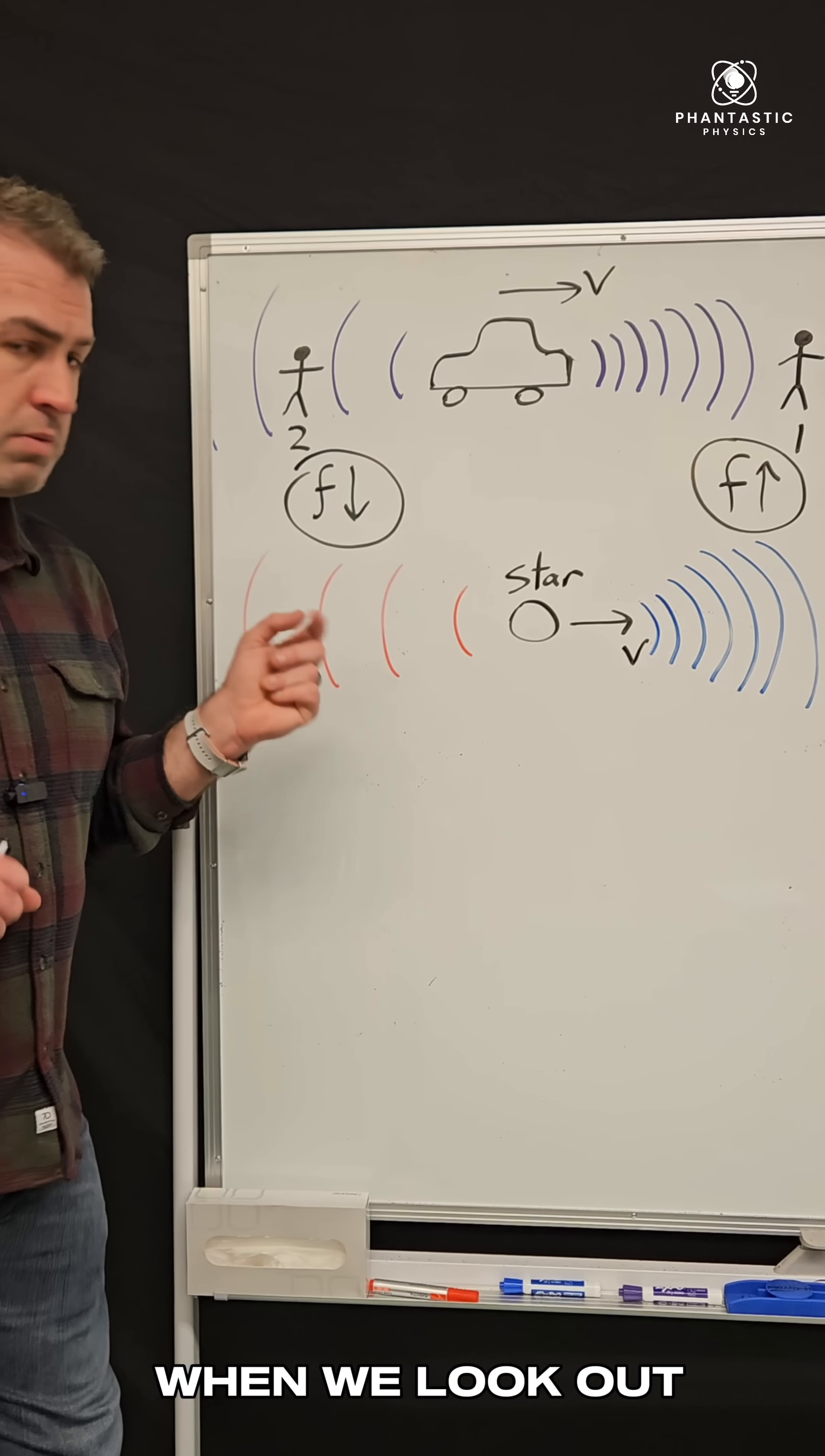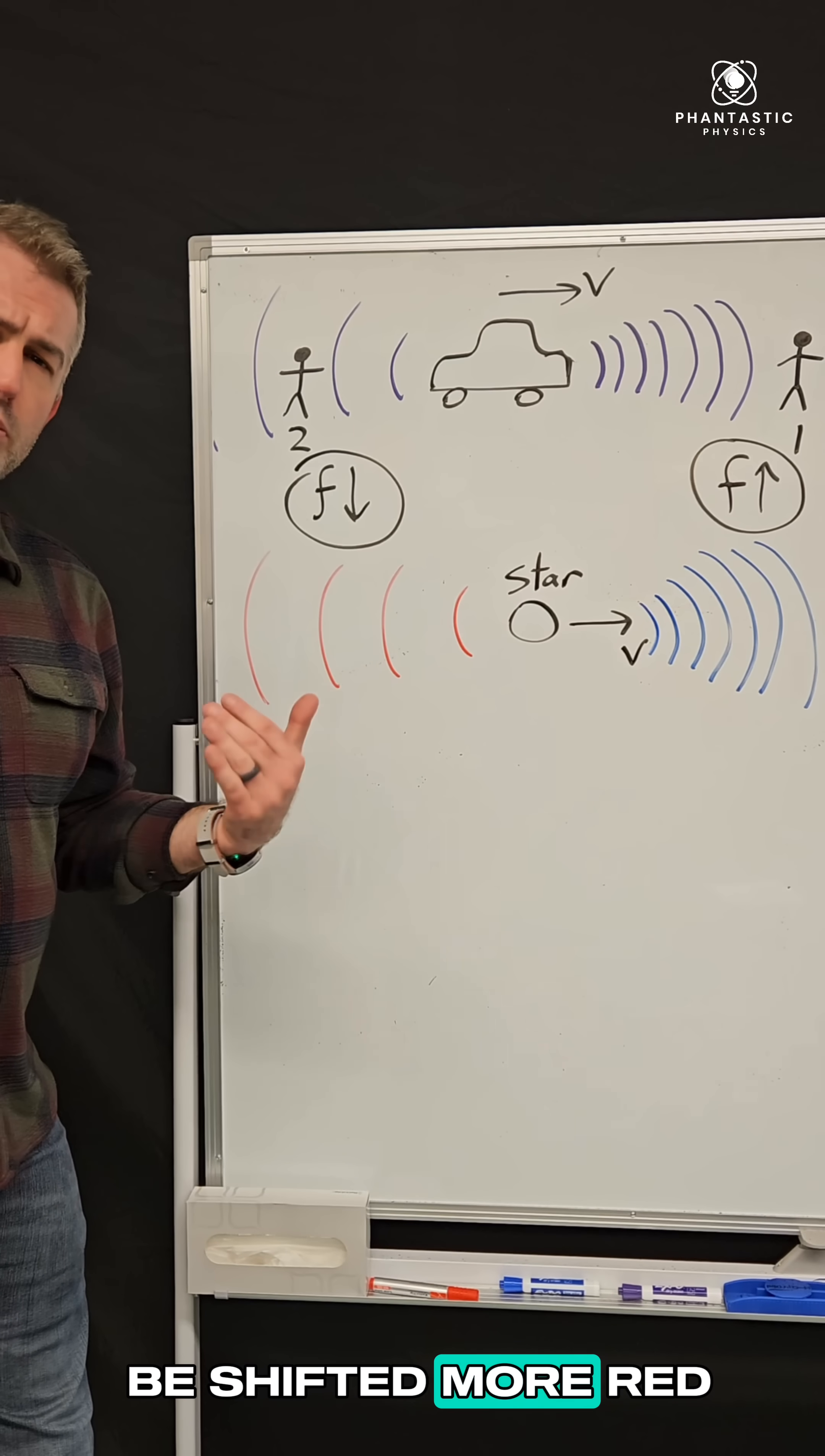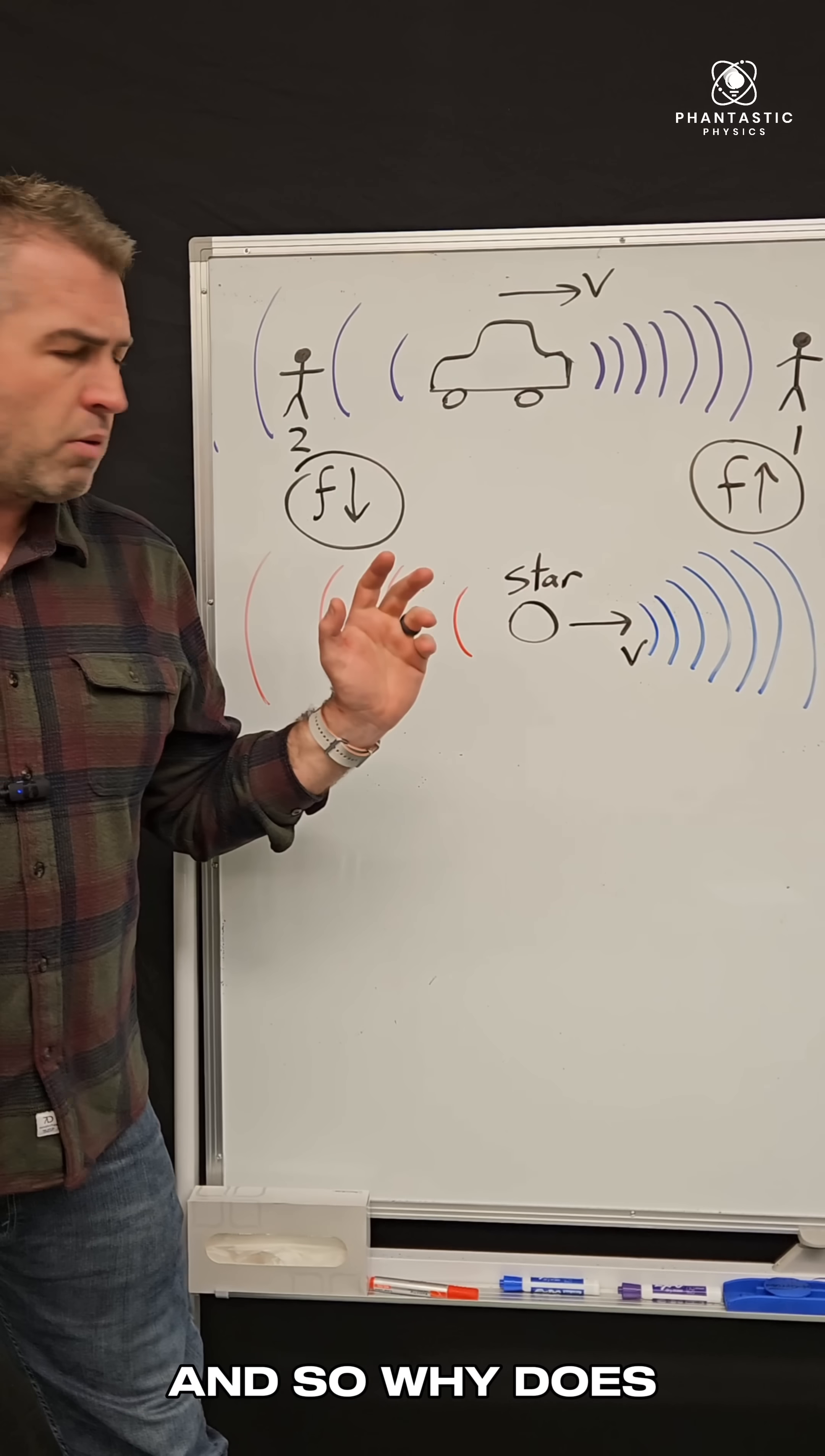So what we notice when we look out in space through our telescopes, we notice that stars that are distant from Earth, they all appear to be shifted more red than they should be. So their light is tilted towards the red side of the light spectrum. And so why does that matter?